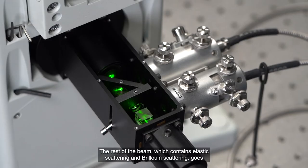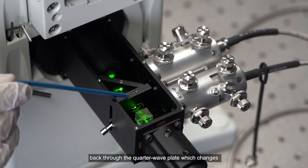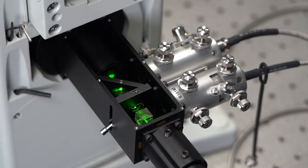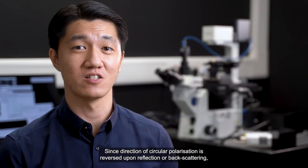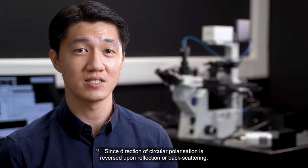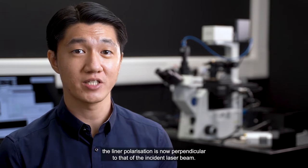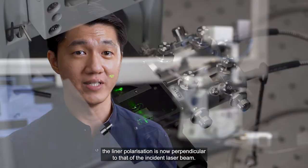The rest of the beam, which contains elastic scattering and Brillouin scattering, goes back through the quarter-wave plate, which changes circular polarization of the beam to linear polarization. Since direction of circular polarization is reversed upon reflection or backscattering, the linear polarization is now perpendicular to that of the incident laser beam.